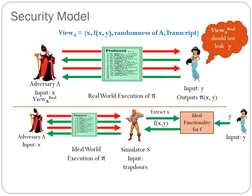This is captured by considering an ideal world execution of the protocol where the adversary interacts with an external party called the simulator. The simulator acts on behalf of the honest party and has access to the honest party only through the ideal functionality. The simulator has to extract the corrupt party's input from the ideal world execution, invoke the functionality with the extracted input X to obtain the correct output F, and based on this output, simulate the rest of the protocol. Clearly, the simulator does not have any information about the honest party's input besides the protocol output.